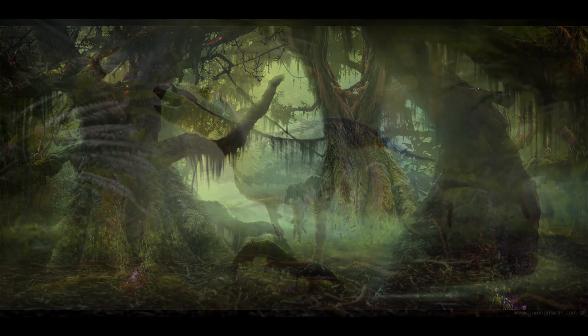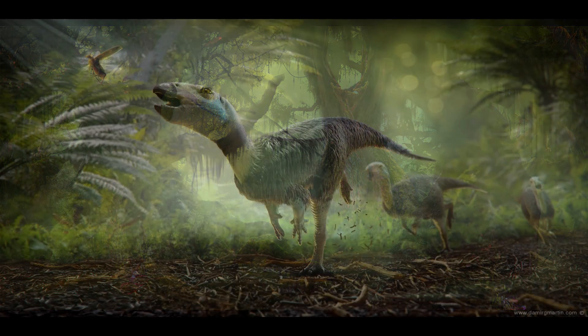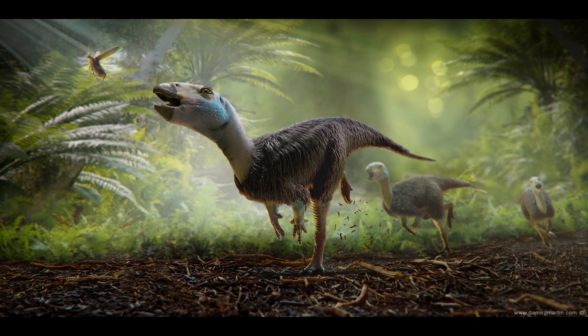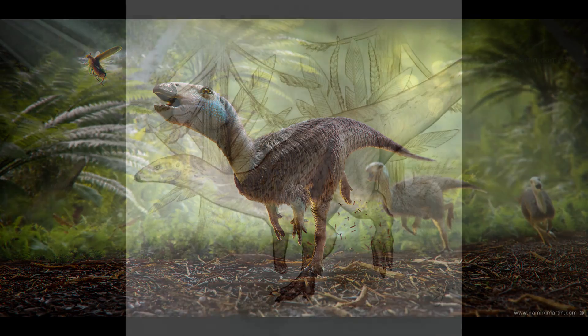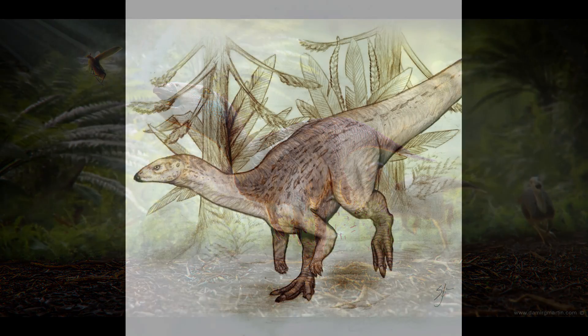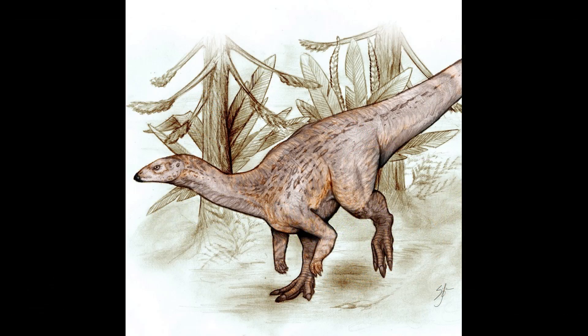The low-browsing Iguanodontine ornithopods persisted with much of their numbers intact, inhabiting the niche of small, fast herbivores. These ornithopods were not closely related to any of their ecological analogues from Eurasia and North America, instead being phylogenetic cousins of the South American Elasmerians and the Rhabdodontids.